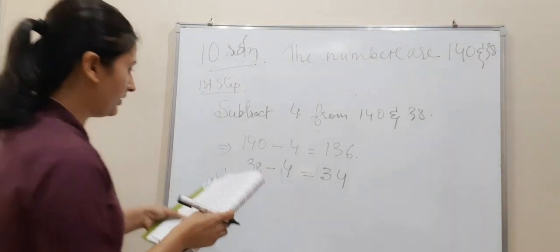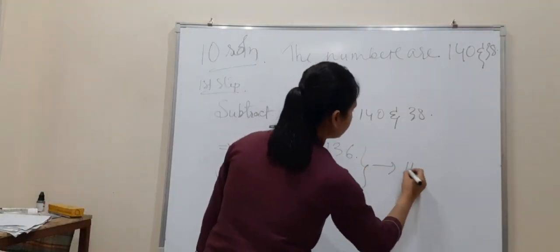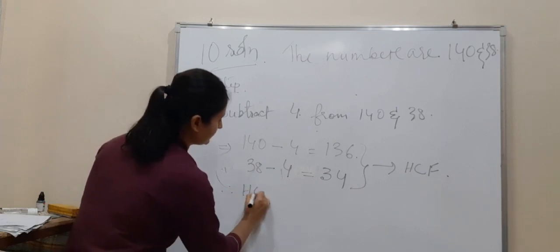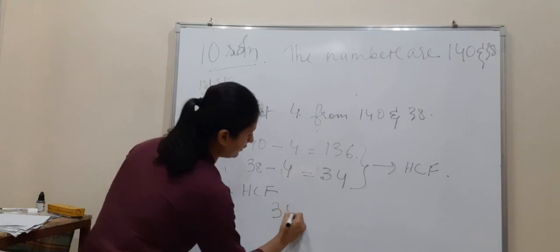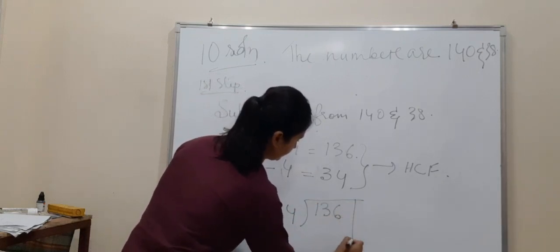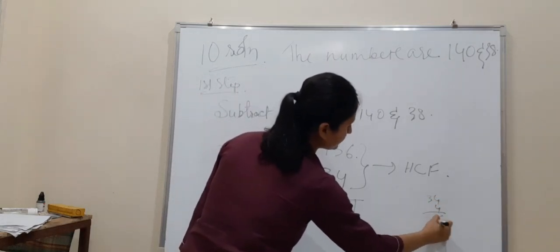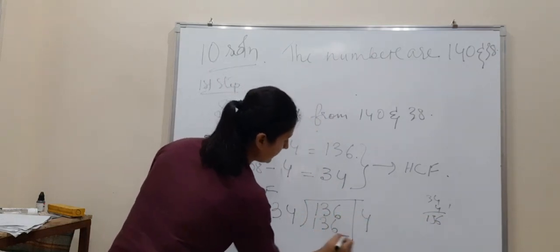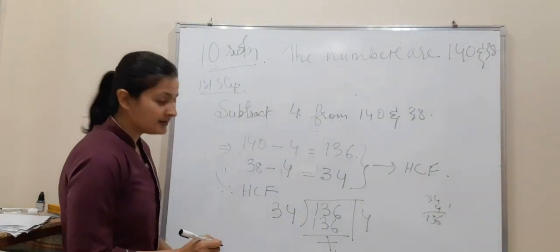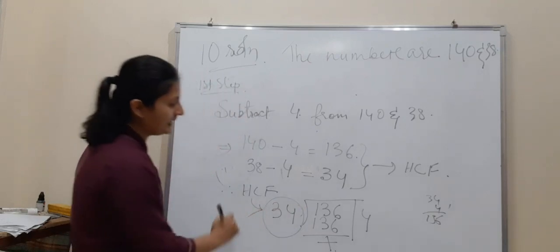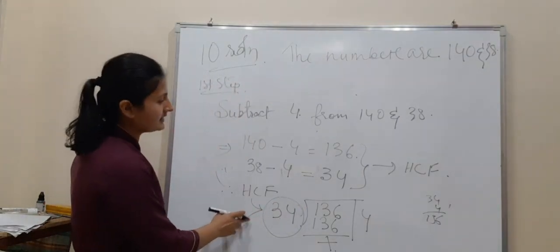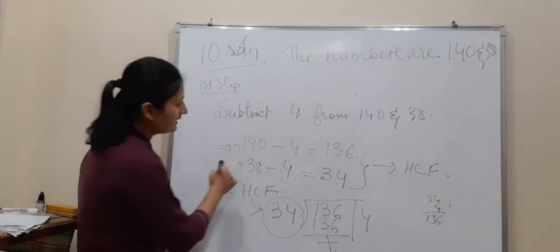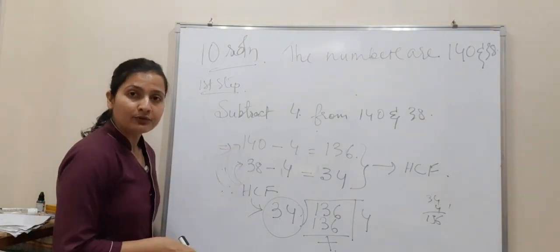So 38 minus 4 will be your 34. Now we have to find the HCF. So we will find this out by using the division method. So 34 goes into 136 — 4 times 34 is 136 — remainder is 0. So 34 is the HCF. It means 34 is the greatest number which will divide 140 and 38 and it will leave remainder 4.